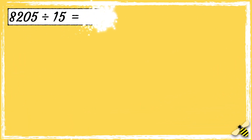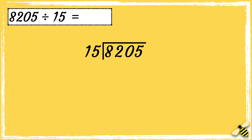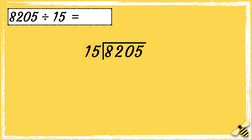Let's have a look at one more: 8205 divided by 15. First we need to draw our bus stop. If you have a pen and paper to hand, pause the video and have a go at working out the answer — write your answer in the comment section below. Now we know that 15 doesn't go into 8.